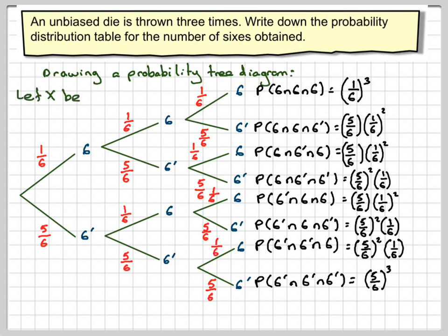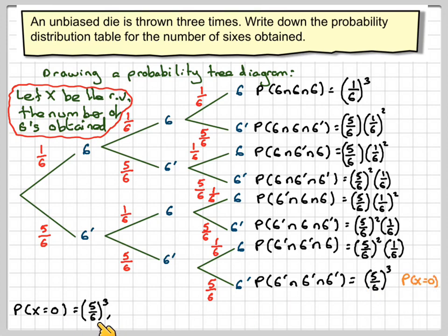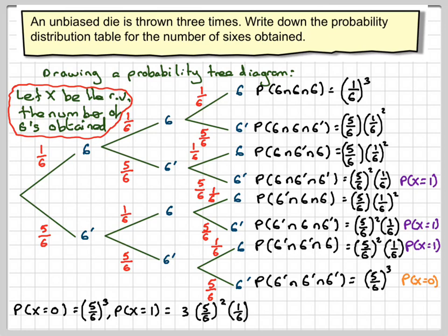Now if we let X be the random variable — the number of sixes obtained — the probability that X equals 0 is five-sixths cubed. The probability that X equals 1 corresponds to three branches on the tree, each giving five-sixths squared times one-sixth, and there are three of them, so we multiply by 3.